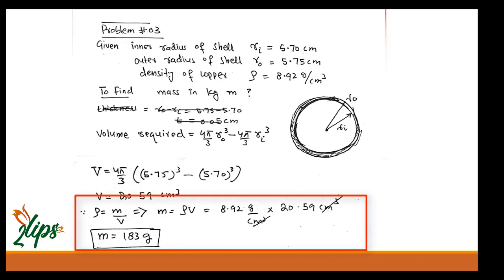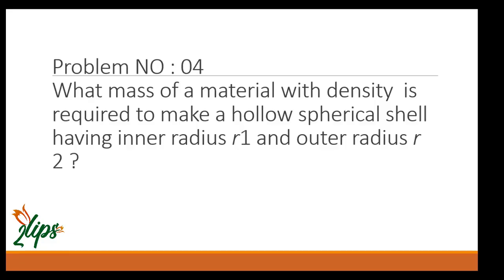Since density equals mass per volume, and we know both density and volume, mass equals ρ × V. Putting in ρ = 8.92 g/cm³ and V = 20.59 cm³, I get mass = 183 grams. Since we need the answer in kilograms, and 1 gram = 10⁻³ kg, this is 0.183 kg.